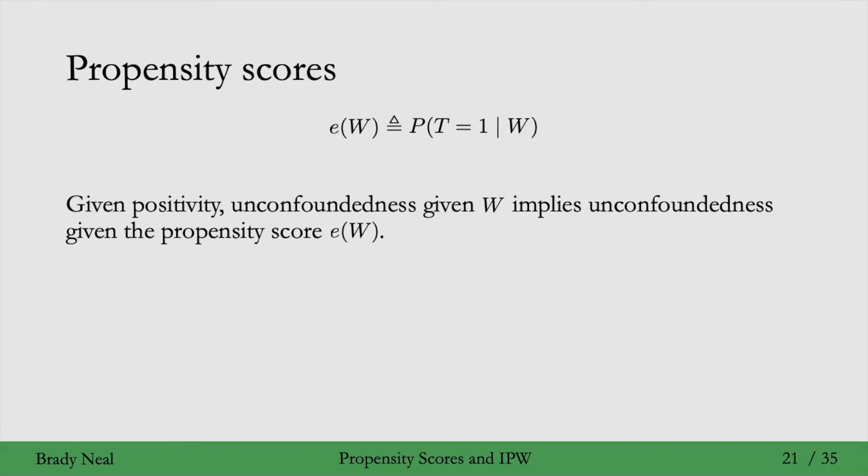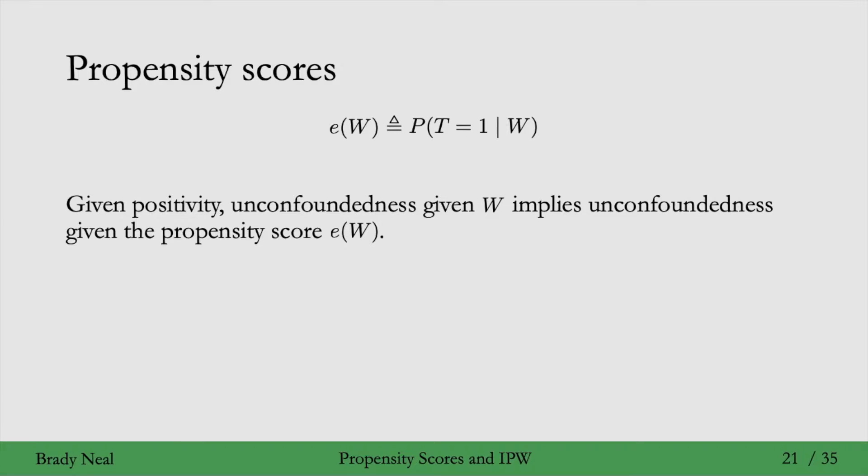Here's the kind of amazing thing about propensity scores. Given positivity, if you have unconfoundedness given W, so if W is a sufficient adjustment set, then you have unconfoundedness given the propensity score e(W).